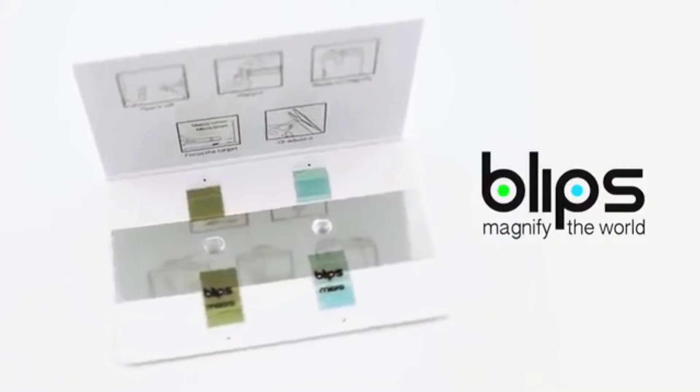The project name is Blips and it's a set of lenses for your camera phone, which is suited for both micro and macro shooting.